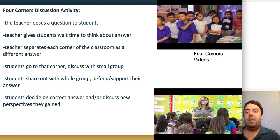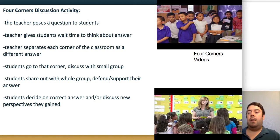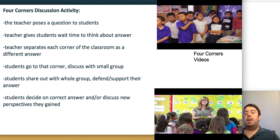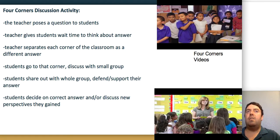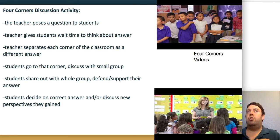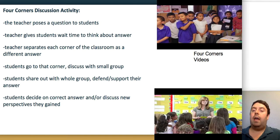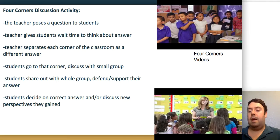Four corners is similar to magnetic quotes. In each of the four corners of the classroom, the teacher posts a possible answer, conclusion, or point of view. After the teacher poses a question, students move to the corner representing their viewpoint and discuss with classmates there why they hold that view. Groups then share out to the class. Afterward, students have the opportunity to move corners if they were persuaded by another group's reasoning—allowing them to change their point of view and learn from peers.